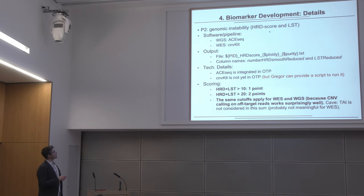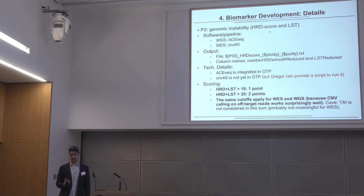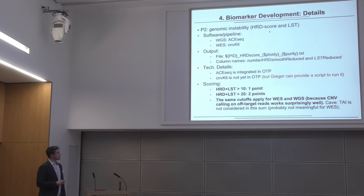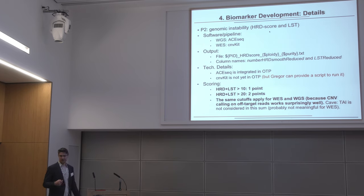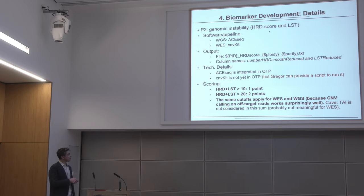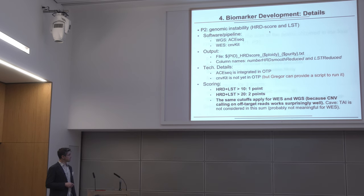For the genomic instability measure, we have a scoring system: if HRD or LST is bigger than 10, one point; bigger than 20, two points. This is somewhat arbitrary. A third criterion always mentioned alongside HRD and LST is TAI — telomeric allelic imbalances — but we don't use it because we have whole exome cases where quantifying telomeric allelic imbalances wouldn't make sense. Interestingly, CNV calling works well even in exomes because off-target reads are sufficient to find breakpoints and do copy number calling.